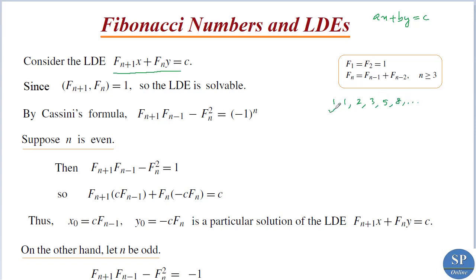This is f1, this is f2, this is f3, and so on. Consider the LDE using these Fibonacci numbers, that is fn and fn+1, the consecutive Fibonacci numbers. We know any two consecutive Fibonacci numbers are relatively prime, that is GCD of fn+1 and fn is equal to 1. We have already proved this.